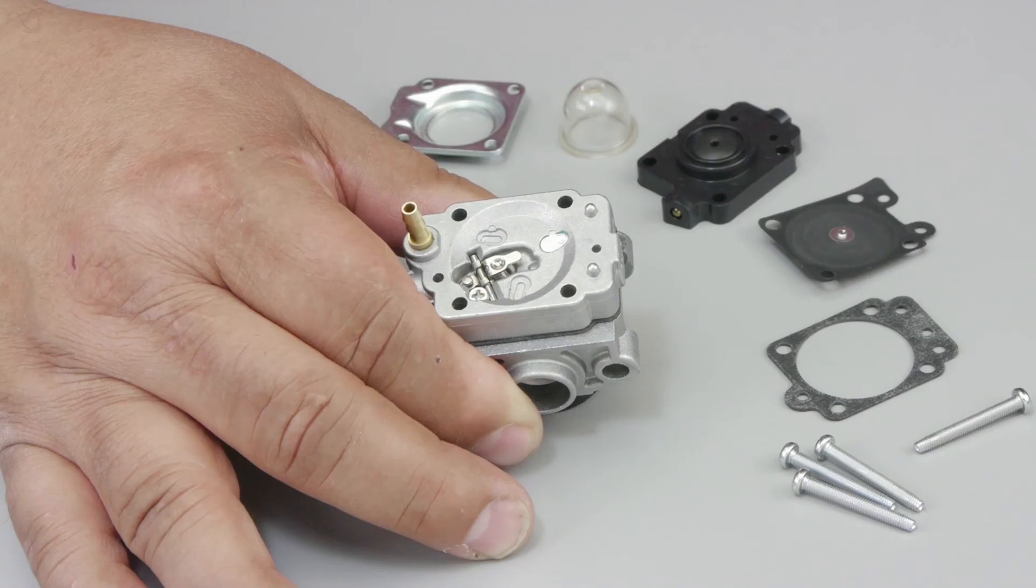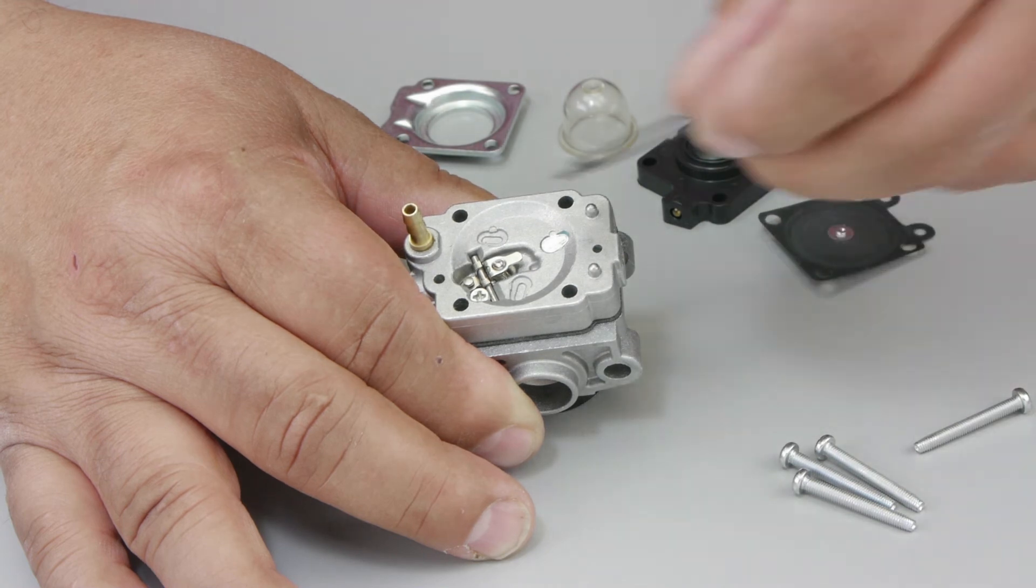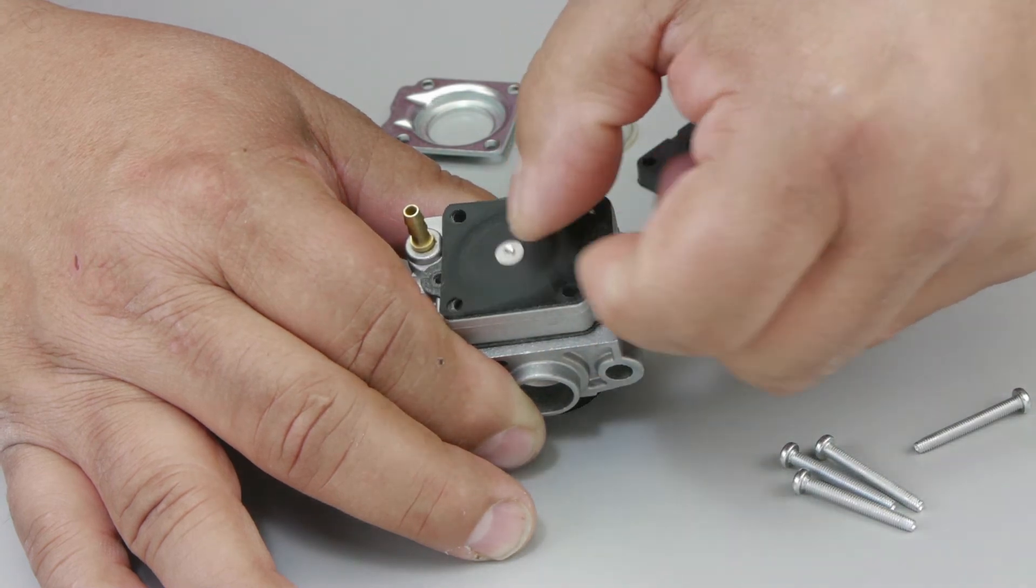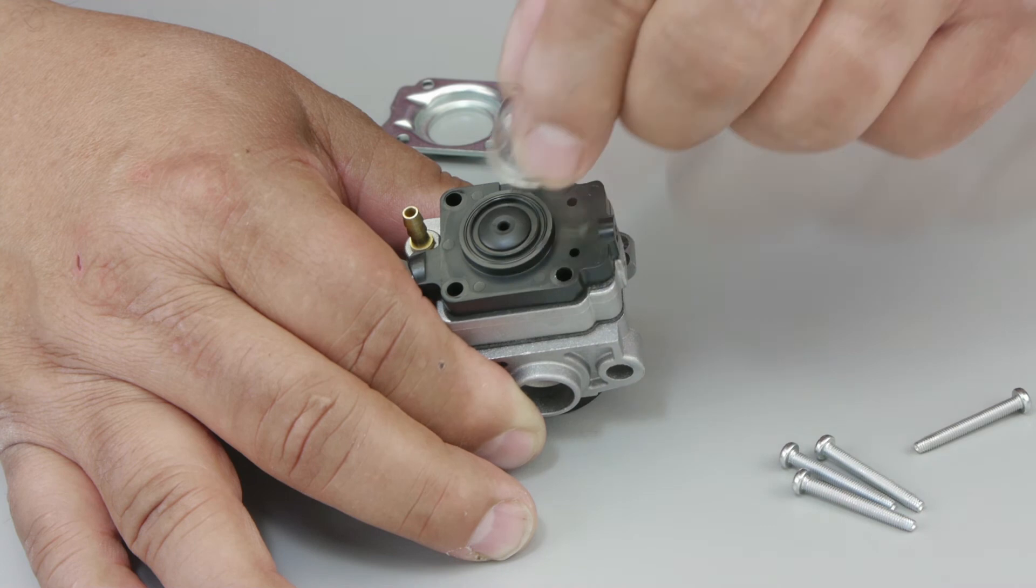The final area to inspect and reassemble is the primer pump assembly. Reassemble using the gasket, diaphragm, purge body, bulb, and cover.